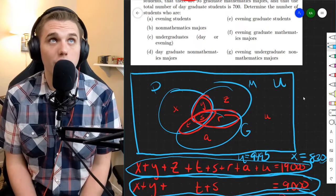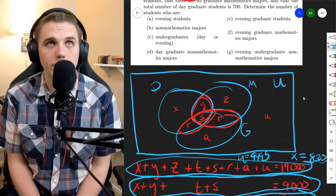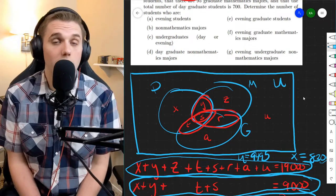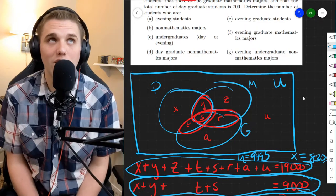For part C, undergraduates, day or evening. So anyone who's not a graduate, so that's X, Y, Z, and U. And you just add up all those four. We already know what these numbers are. And so just adding these numbers is just a matter of plugging into your calculator.